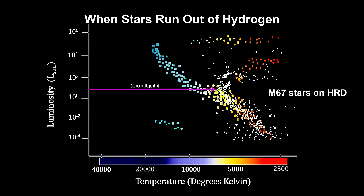The turnoff point gives us the luminosity of the stars moving off the main sequence. The mass-luminosity relationship gives us the mass. And with the mass, we can calculate the age. For M67, we find that it's around 4 billion years old. We then know the age of all the stars in the cluster.